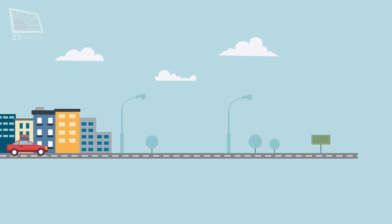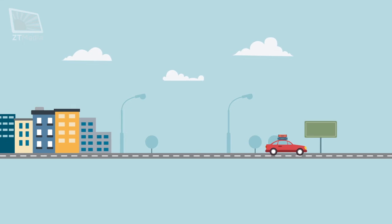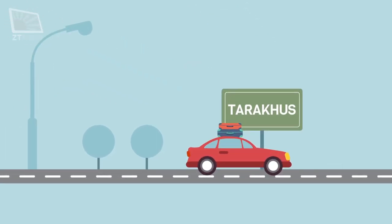When does a traveller start applying ahkam of travelling? It starts by reaching the limit of Tarakhus, which is a place where people of the city do not see the traveller and the traveller does not see them.